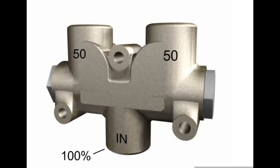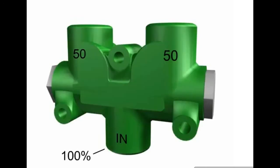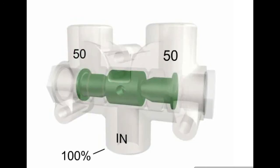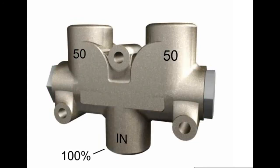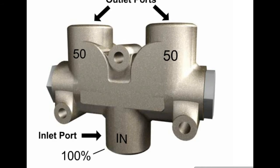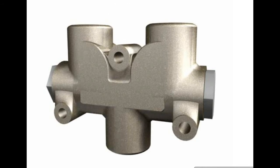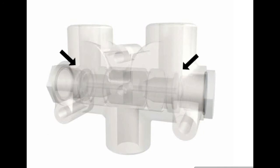This is a spool-type proportional flow divider. These flow dividers consist of a housing, a spool, and two end caps. The housing has three ports: one inlet port and two outlet ports. A narrow passage connects the center cavity and each of the outlet ports.